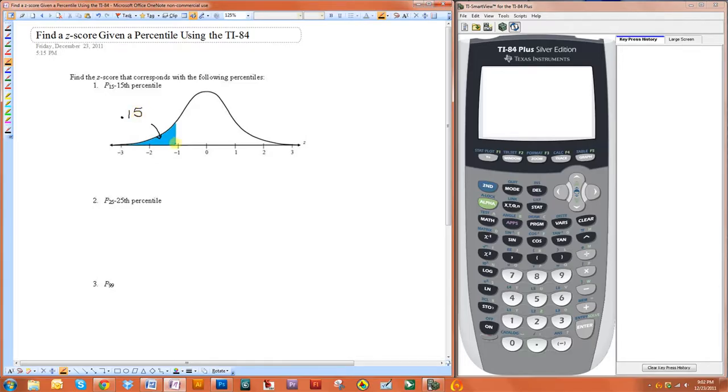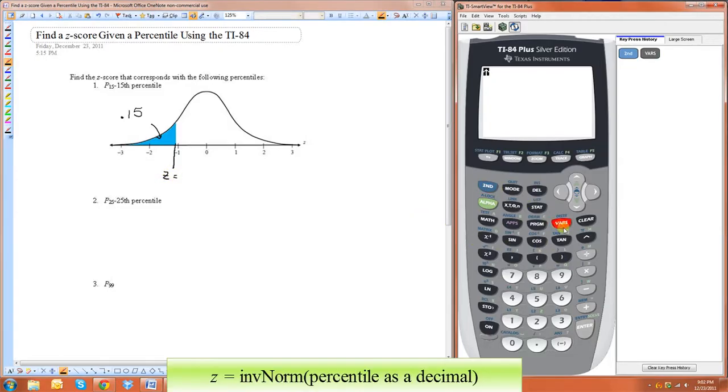So what we're looking for is this value right here, what z is that? All you have to do is use the inverse normal function, so you just do second vars and then go down to number 3 for invNorm, and you just put in 0.15, that's all you're going to do.